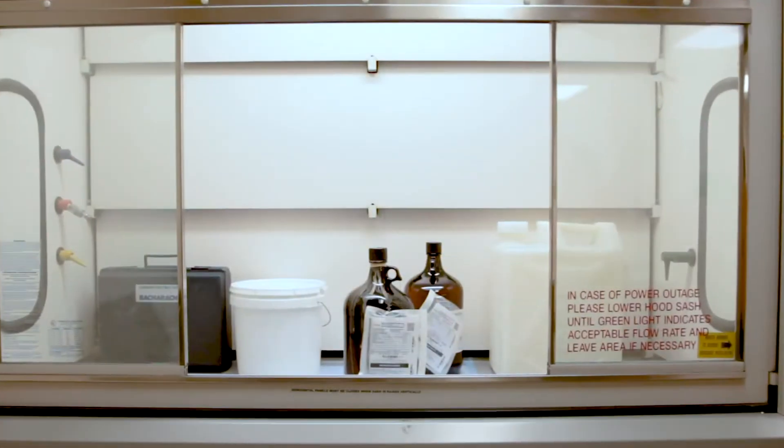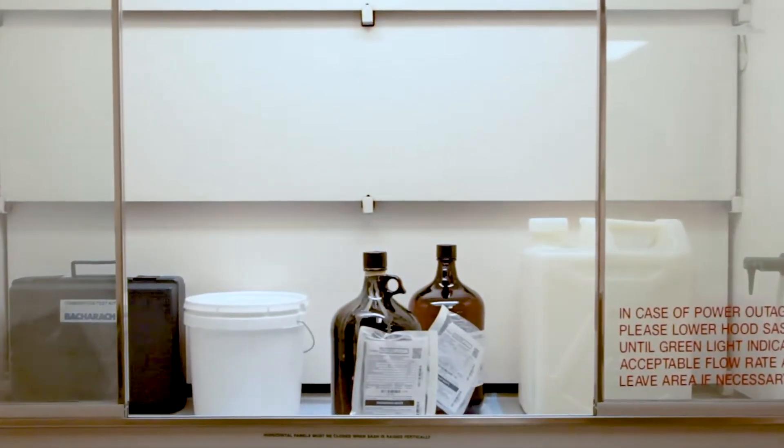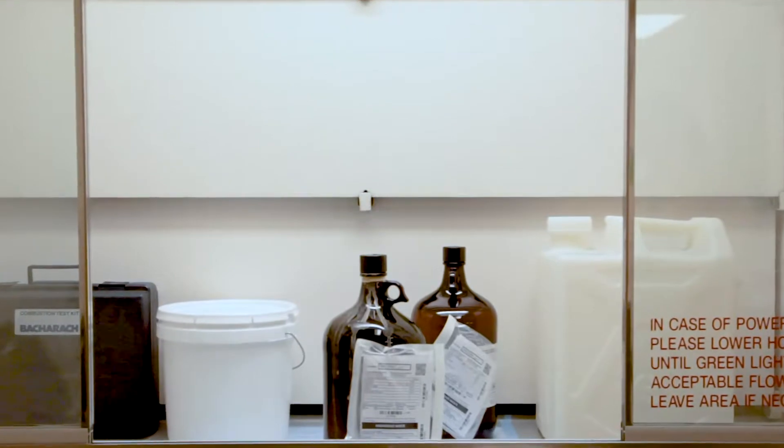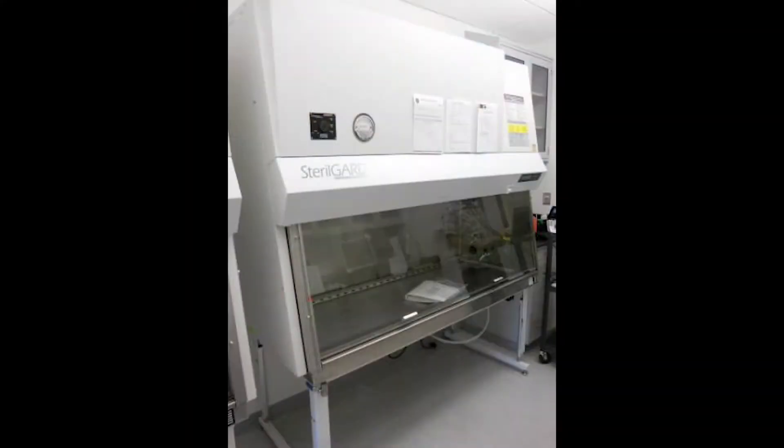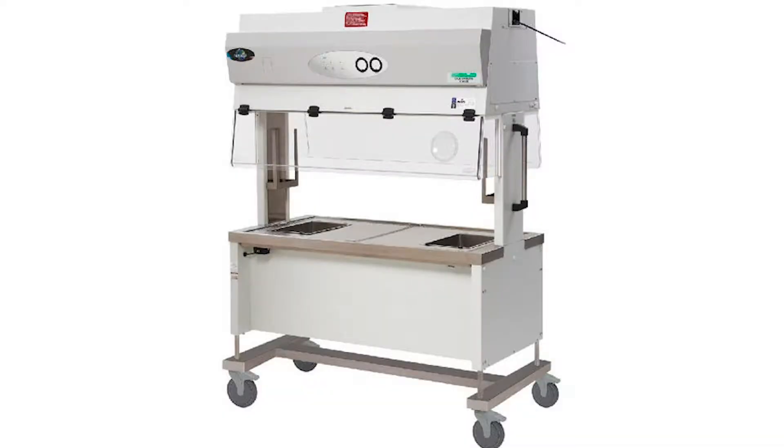Some laboratory equipment may resemble a fume hood, but they do not provide the same level of protection and should not be used for volatile chemicals. These include biosafety cabinets, laminar flow hoods, animal changing stations, and sterile work stations.